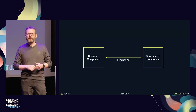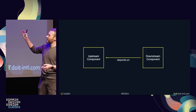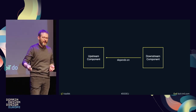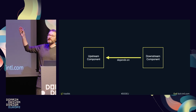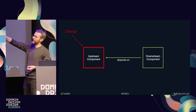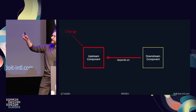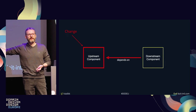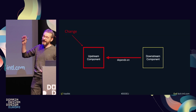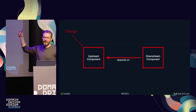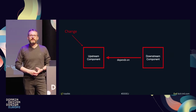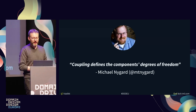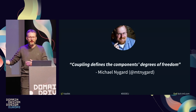Let's define some terminology — a ubiquitous language for our bounded context. We have a downstream component that depends on an upstream component. That relationship defines how a change in the upstream is likely to cause cascading changes and break integration with downstream components. In other words, if you're making a change to the upstream, how much risk is involved? If any change to the upstream results in cascading changes to downstream, they are tightly coupled. As Michael Nagar says, coupling defines the components' degrees of freedom — how freely they can change without affecting other parts of the system.